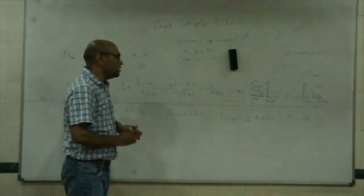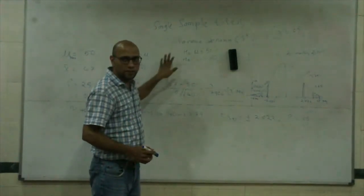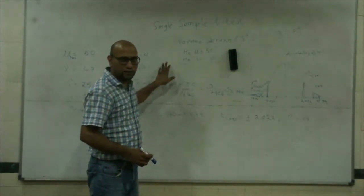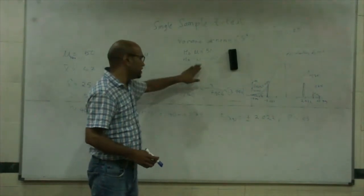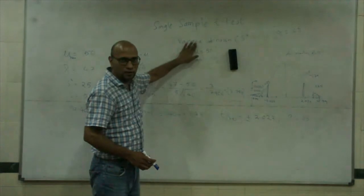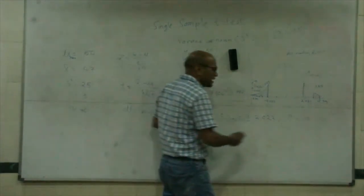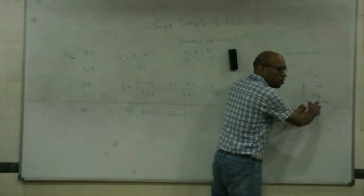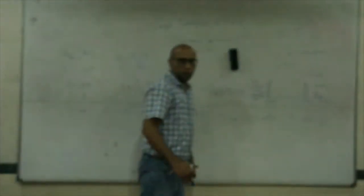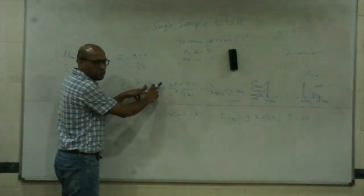If I get a value smaller than 50, and my alternative is greater than, then I accept the null. What I am trying to do is look at the area beyond the mean. I am expecting x̄ to be larger than μ.